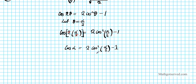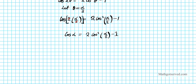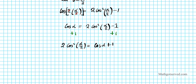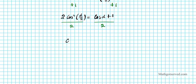To get cosine of alpha over 2 by itself, we'll get rid of the 1 first, then the 2, then the square. We add 1 to both sides and switch it around: 2 cosine squared of alpha over 2 equals cosine alpha plus 1. Next, we divide both sides by 2, and the two 2's divide out, yielding cosine squared of alpha over 2 equals cosine alpha plus 1, over 2.